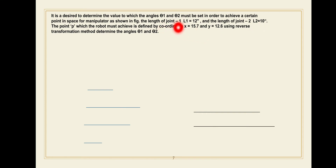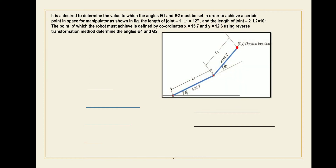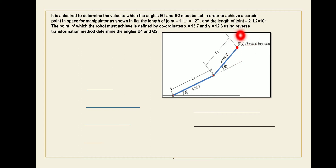The given parameters are: length of joint 1, L1 = 12 inches; length of joint 2, L2 = 10 inches; and Cartesian space coordinates x and y. In the figure, two links are shown — link 1 and link 2. Theta 1 is the angle between the axis of link 1 and the horizontal. Theta 2 is the angle between the axis of link 1 and the axis of link 2. Point P(x, y) is the desired location. You have to find angle theta 1 and theta 2 using the inverse transformation method.